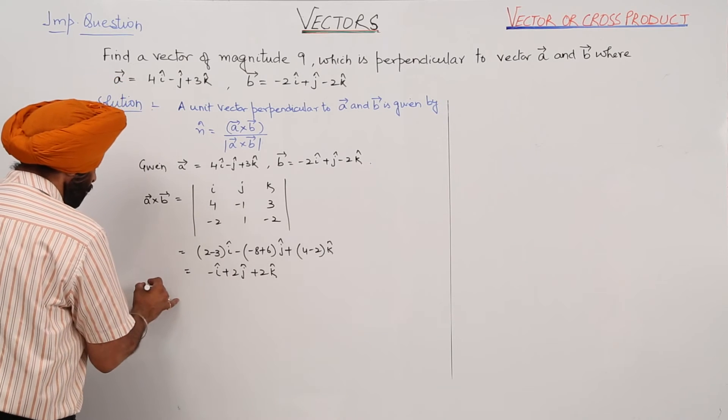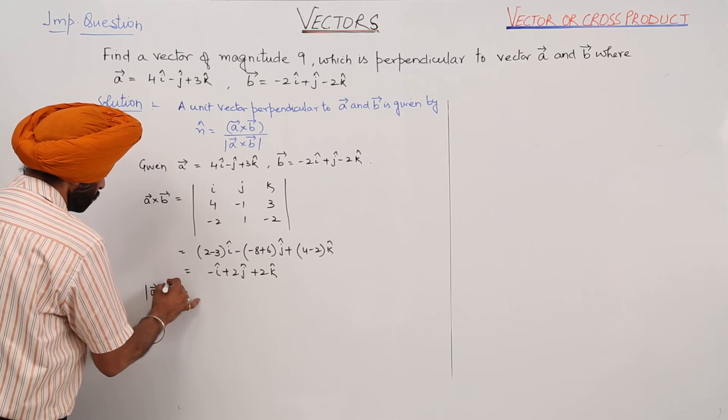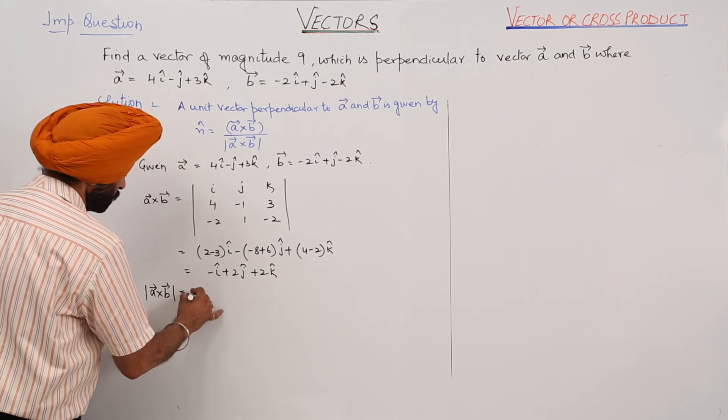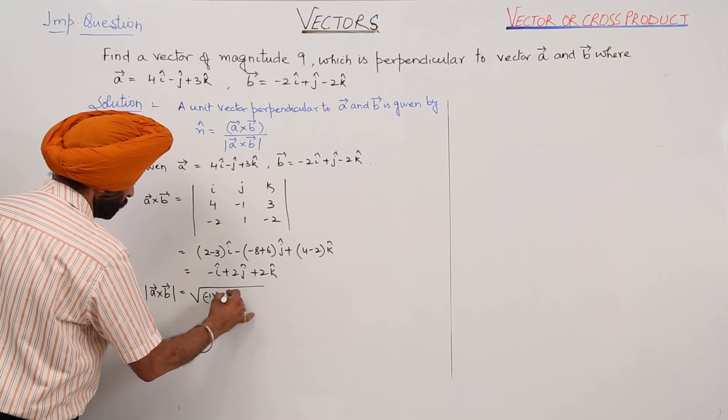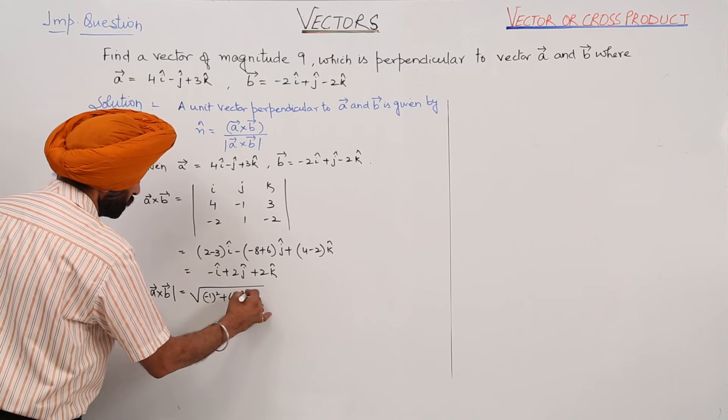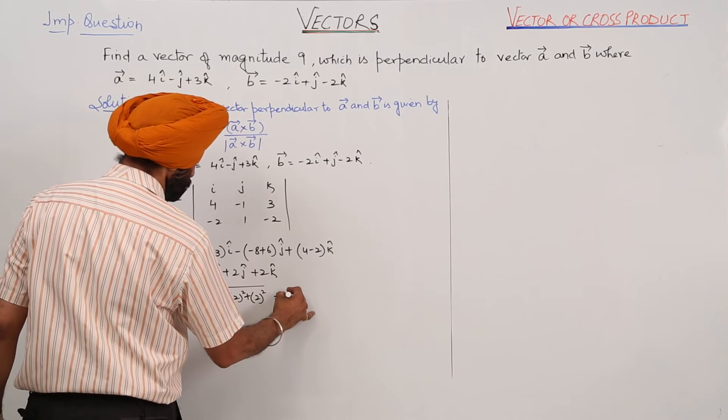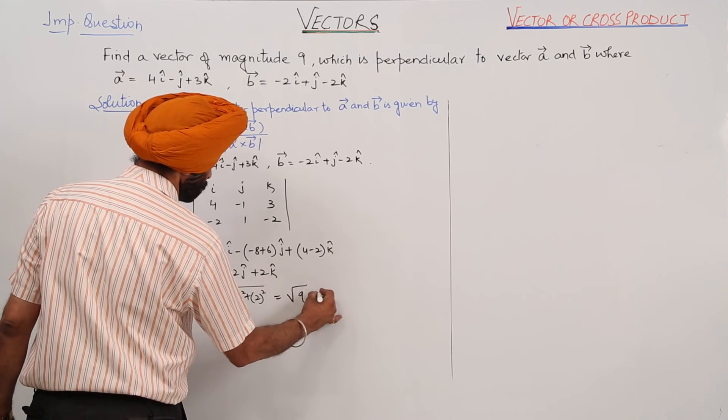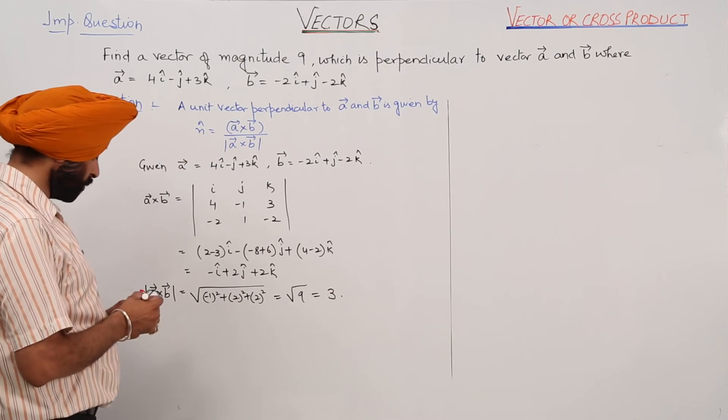The magnitude of the cross product equals the square root of 1 squared plus 2 squared plus 2 squared, which equals square root of 9, or 3.